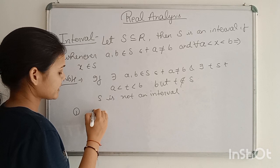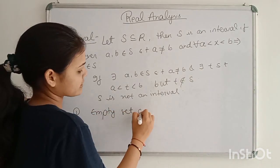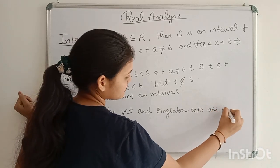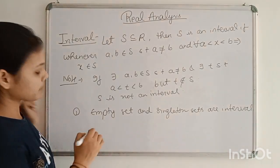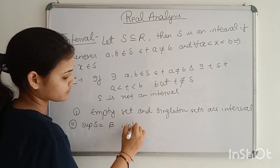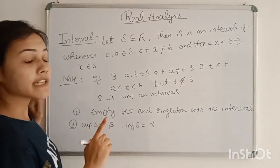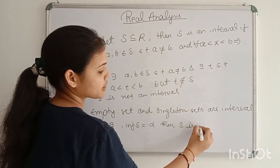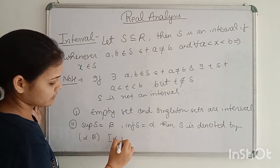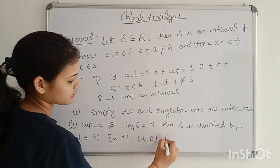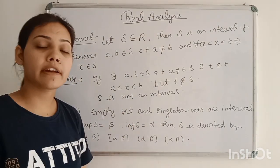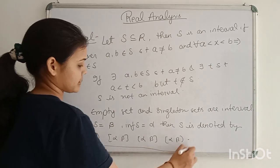Properties or results of interval. And if we talk about supremum infimum, supremum of S as beta and infimum of S as alpha. Then, S is denoted by alpha-beta. This depends on whether supremum infimum belong to S or not. That's how we denote intervals.